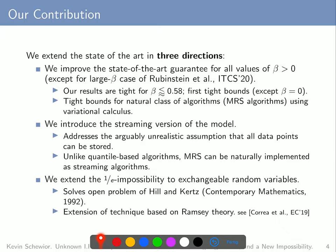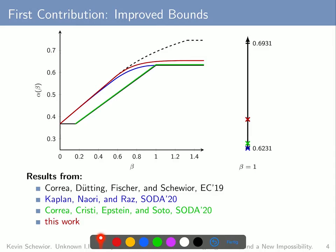Since I don't have time to talk about all contributions in detail, I will from now on focus on the first contribution. Let me first show you the improved bounds in the figure from the last slide — these bounds are now depicted in red. Most remarkably, in the range of beta between 0 and 0.58 we get a tight bound, and for beta equals 1 we get a much more significant improvement than that by Correa and others from SODA 2020.